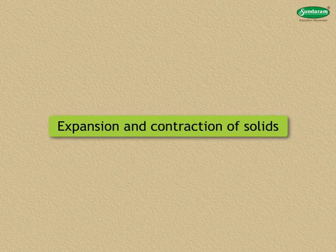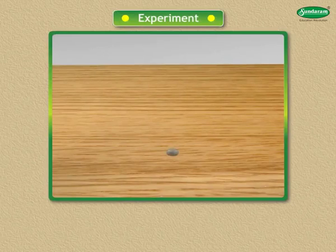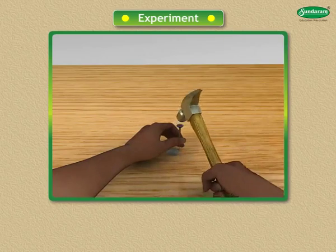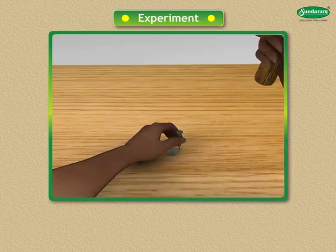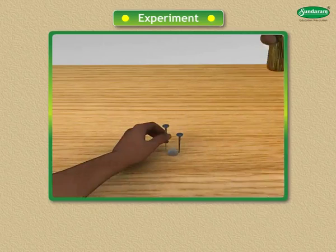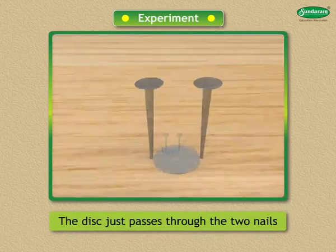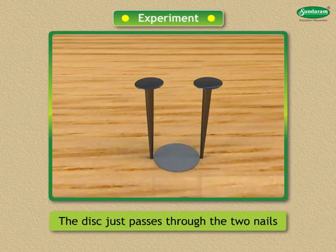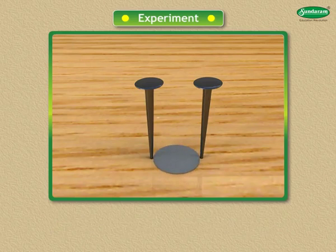Let us perform another experiment based on the property of expansion and contraction of solids. Place a metal disc of the size of a one rupee coin on a wooden board. Now hammer two nails on the board in such a way that the disc will just brush lightly against the two nails as it is slid between them.